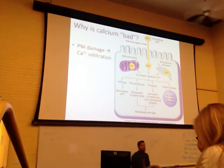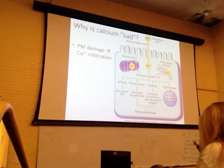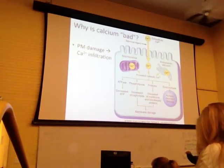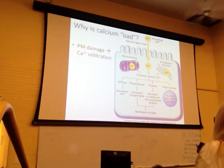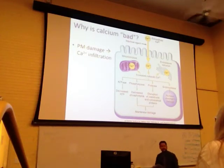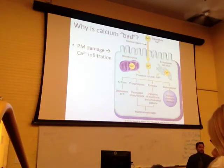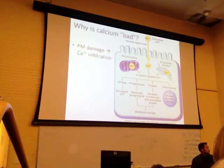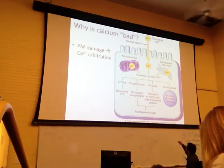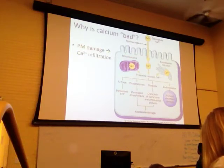Why is calcium bad inside the cell? If you have a flood of calcium inside the cell, look at all the enzymes it activates — ATPases, phospholipases, proteases, and endonucleases. An ATPase will lower the amount of readily available ATP. A phospholipase will chew up your membrane — that's where the holes come from. A protease will ruin your cytoskeleton and other proteins. And an endonuclease will destroy your DNA.